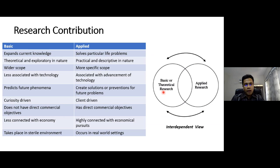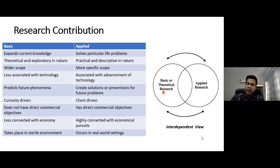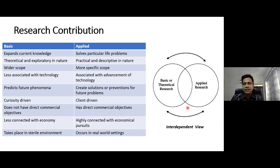Basic research takes place in a sterile environment, while applied research occurs in real-world settings. There is a huge gap between basic and applied research, both of which occur in university environments. There are two views: an independent view where they operate separately, and an interdependent view — the current focus over the last one to two decades — where some components are shared but they still function largely separately. Theoretical research goes in one direction while applied research goes in another, and that should not be the case.